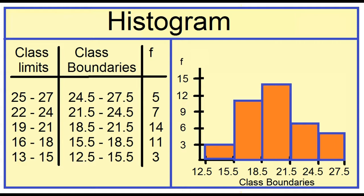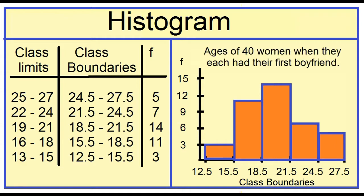This is the histogram for the ages of 40 women when they each had their first boyfriend. What is a histogram? A histogram is a graph that displays the data by using vertical bars to represent the frequencies.